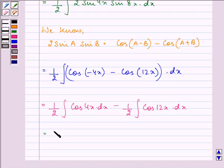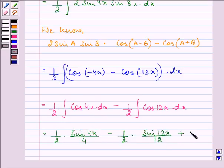Now the integral of cos θ is sin θ divided by the derivative of the angle. This gives us sin 4x divided by 4 minus 1/2 times sin 12x divided by 12 plus c.